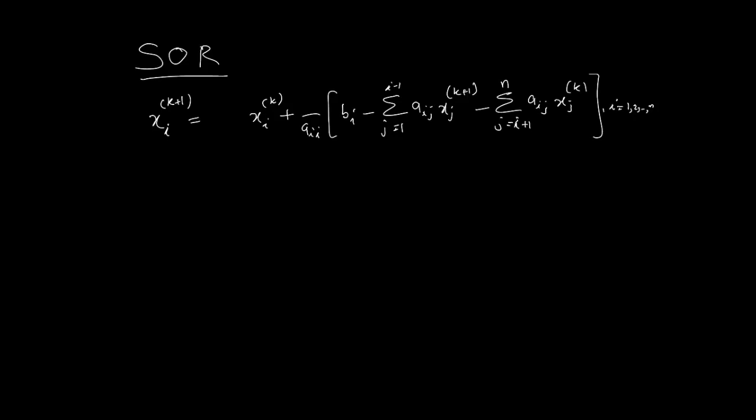The two methods we've looked at earlier are Jacobi and Gauss-Seidel, and clearly Gauss-Seidel is the better of the two methods and much faster. So the idea here is to look at how we could possibly improve the Gauss-Seidel.